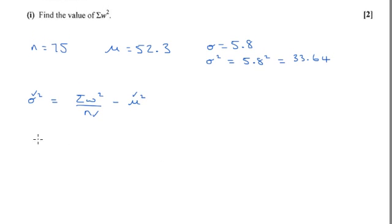So, I'm going to write down that 33.64 is equal to the sum of w squared that we're looking for over 75 minus 52.3 squared. Don't forget to square that mean. So, if we rearrange it by adding 52.3 squared to the other side...